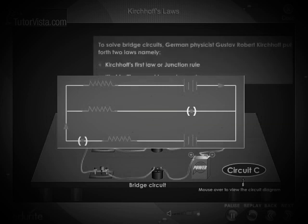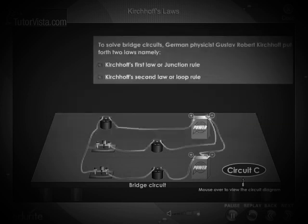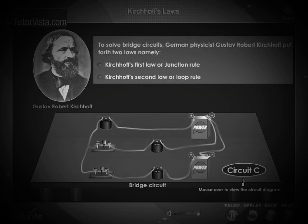To solve such bridge circuits, German physicist Gustav Robert Kirchhoff put forth two laws, namely: Kirchhoff's first law or junction rule, and Kirchhoff's second law or loop rule.